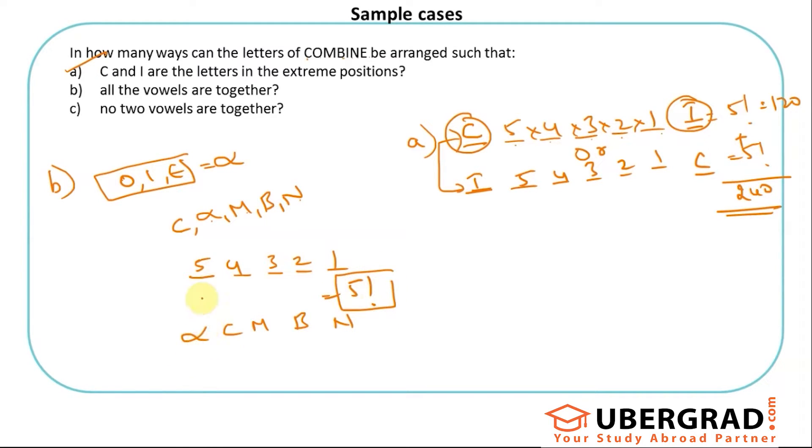But understand this: what is alpha? O I E together. But it could be that I have O I E C M B N, or I can have O E I C M B N, or I can have I E O C M B N, and etc. I can give actually three more cases. But understand this, all of this is alpha. I just said alpha is O I E together. The sequence could be anything in between them.